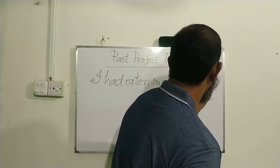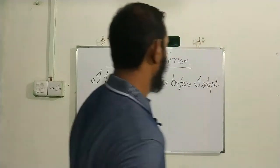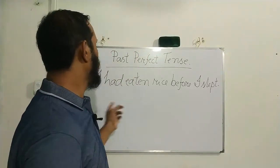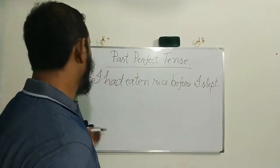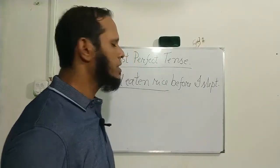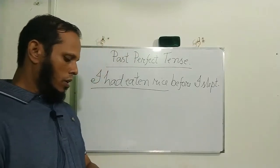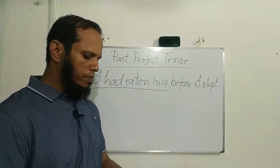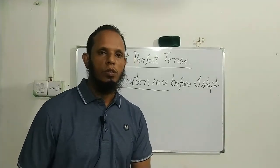I had eaten rice — this is Past Perfect Tense. So, if we look at these examples, here is how they work.